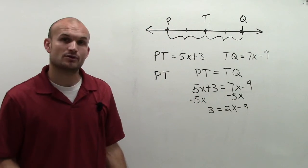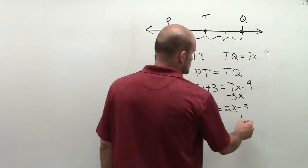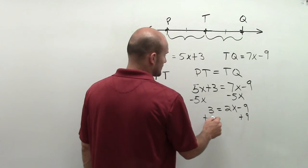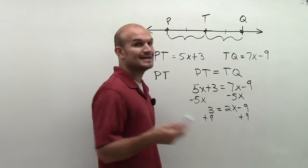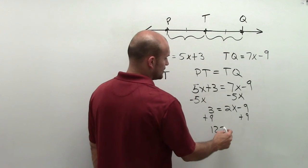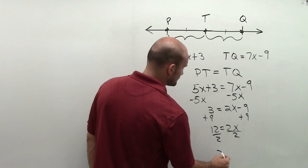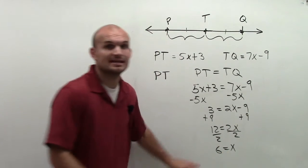So now I have a two-step equation, which remember, I always got to undo addition and subtraction first. So I'll undo subtracting 9 by adding 9 on both sides using the addition property of equality. So 12 equals 2x, divide by 2, and I get 6 equals x.